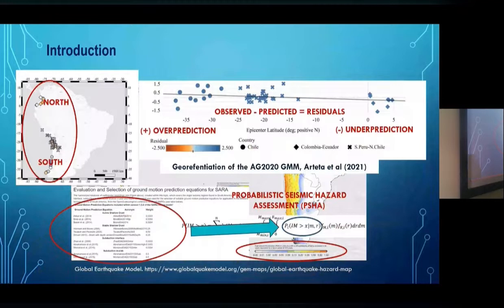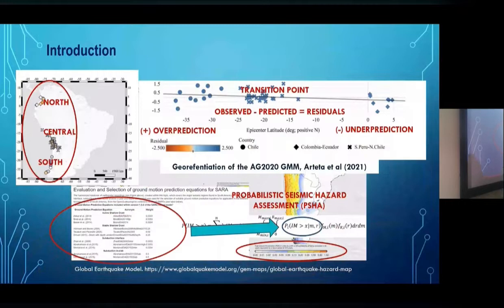This shows that if we use ground motion models developed using data from different regions and then apply that equation to predict intensity measures for regions that lack local ground motion models, we can encounter issues. These issues can be evaluated in terms of residuals.